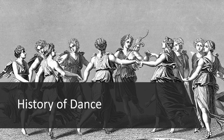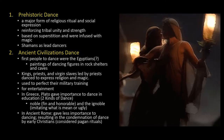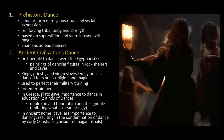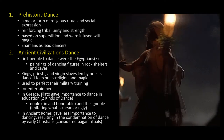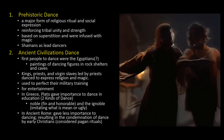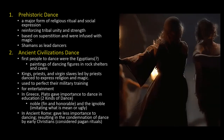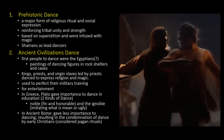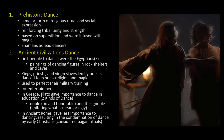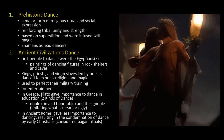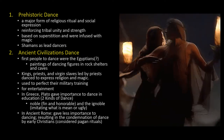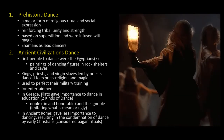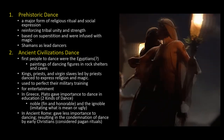The next section is the history of dance. Dance had been a major form of religious ritual and social expression within primitive culture. It was also used as a way of expressing and reinforcing tribal unity and strength. In the prehistoric period, dance forms were based on superstition and were infused with magic. Shamans as lead dancers acted as physicians and religious leaders and they kept tribes healthy, prosperous, and safe. During the ancient civilization period, it is believed that the first people to dance were the Egyptians. Archaeologists discovered paintings of dancing figures in rock shelters and caves. Kings, priests, and virgin slaves led by priests danced to express religion and magic. Some dances in this period were also used to perfect military training.